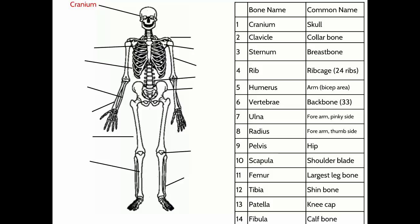The cranium protects your brain. Our vital organs like the brain, heart, and lungs are protected by thick bone to prevent damage. The cranium helps protect the brain inside.